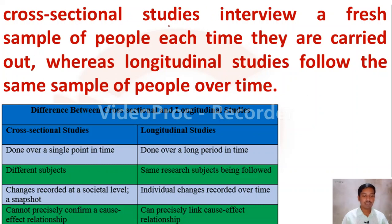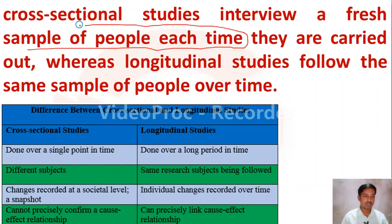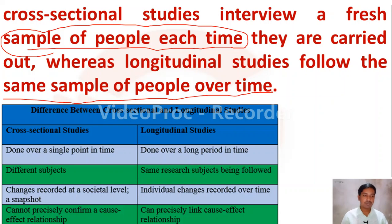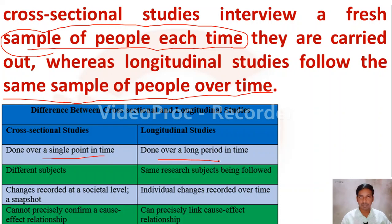In cross-sectional studies, the researcher interviews a fresh sample of people each time, choosing different samples for different studies. In longitudinal studies, the researcher chooses the same sample over a period of time. Cross-sectional studies are done over a single point in time while longitudinal studies are done over a long period. Cross-sectional studies use different subjects; longitudinal studies follow the same research subjects. Changes in cross-sectional studies are recorded at the society level, while in longitudinal studies, individual changes are recorded.